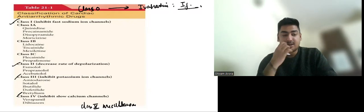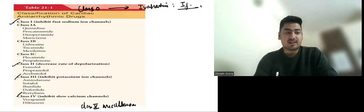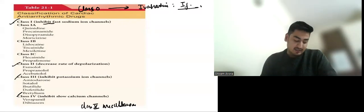Then class 1 is the most important of all antiarrhythmics. The class 1 are the drugs which inhibit fast sodium channels.